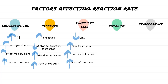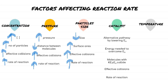The fourth factor affecting reaction rate is catalyst. A catalyst provides an alternative pathway by lowering the activation energy. The energy required to overcome the activation energy will decrease. Therefore, molecules with kinetic energy greater than or equal to the activation energy will increase, which increases effective collisions as well as the rate of reactions.